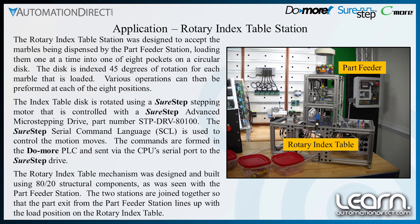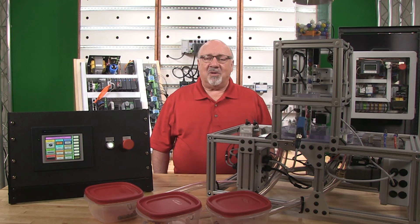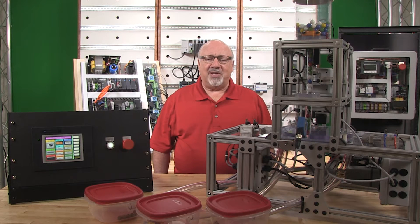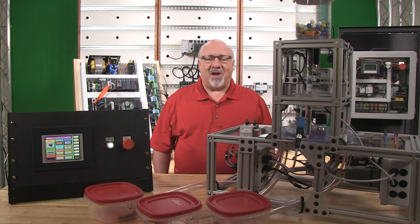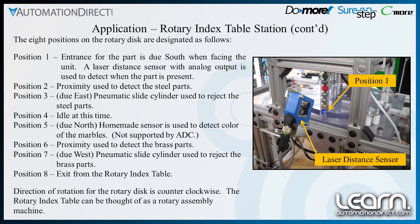The index is a rotary disk. The disk has eight pockets, which can also be described as stations, which allow different operations to occur at each of the stations. The marbles enter the first station in the circular disk that has eight pockets spaced 45 degrees apart. The eight stations are defined as shown here on the slide.